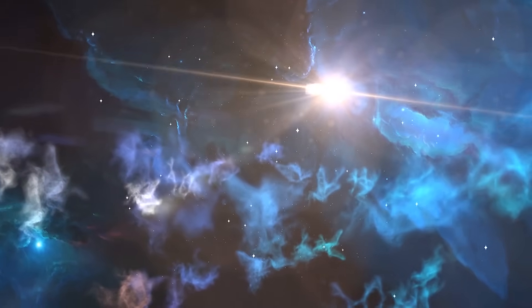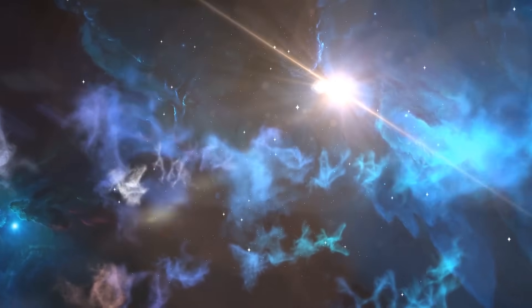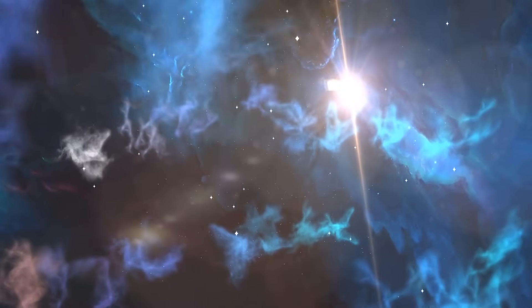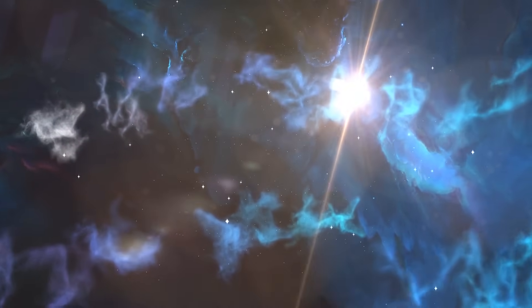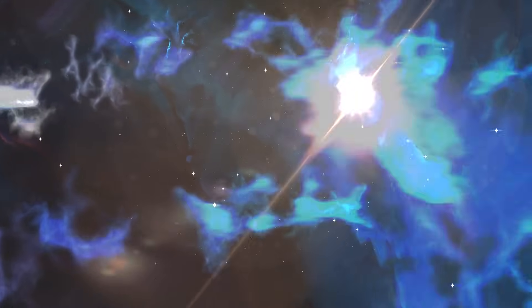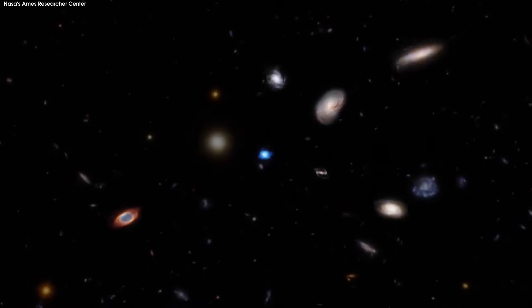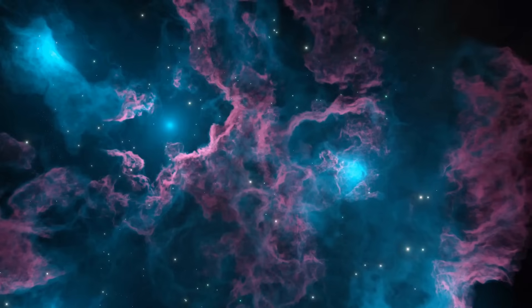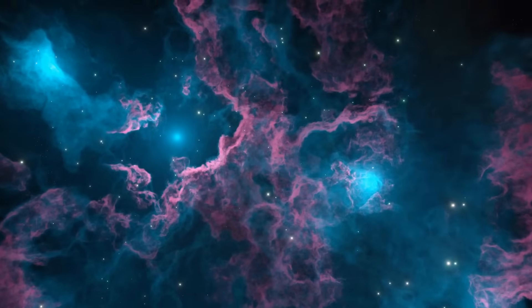This leaves the stellar core with a mass between one and two times that of the sun condensed down to a width of only around 12 miles. This massive reduction in the size of what is now a neutron star creates matter that is so dense a mere sugar cube-sized block of it would weigh around 1 billion tons if brought to earth.